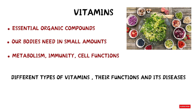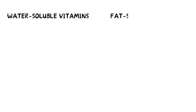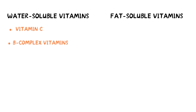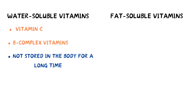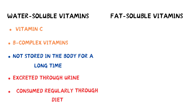We'll cover their functions and the diseases that can be caused by deficiency. So let's start with the two main types of vitamins: water-soluble vitamins and fat-soluble vitamins. Water-soluble vitamins include vitamin C and the B complex vitamins. These vitamins are generally not stored in the body for a long time and are excreted through urine, so they need to be consumed regularly through diet.